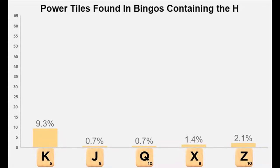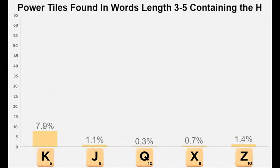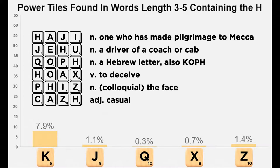Lastly, bingos with the H and the power tiles together are extremely rare and there aren't very many shorter words with them either. This means that words like haji, jehu, cough, hoax, fizz, and cash are critical to learn as some of the very few options you'll have to play off your H along with the power tile.